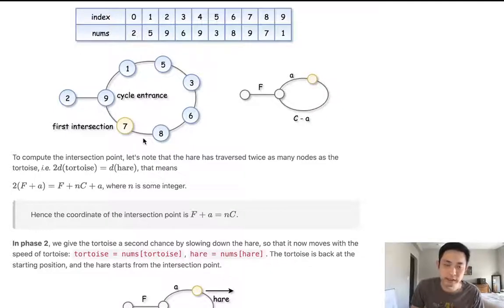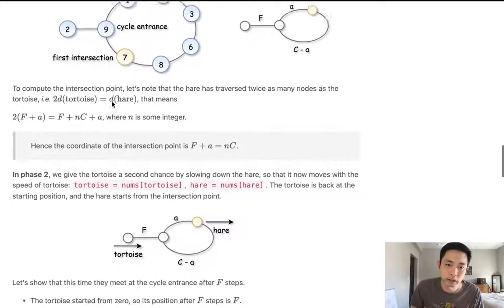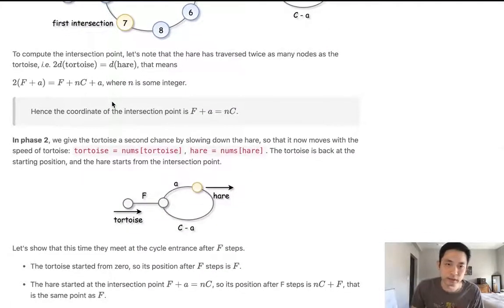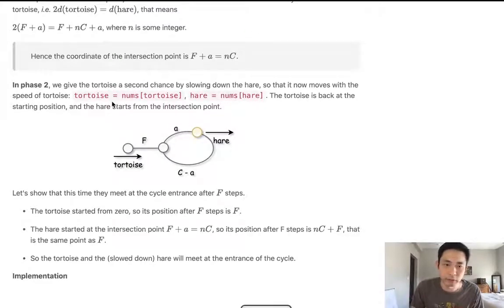this amount of distance is going to be the amount of distance it takes plus however many cycles are inside there that's going to reach. If you start at this intersection and go from the beginning and go from this intersection, it'll meet right at the point at which the cycle begins.